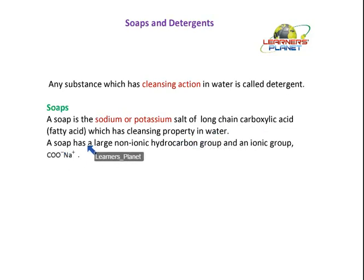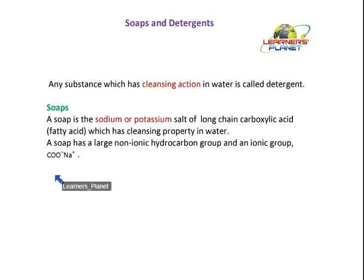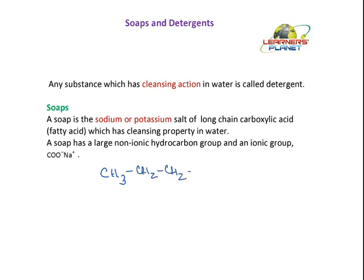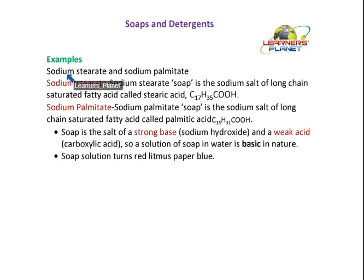Now let's see its structure. A soap has a large non-ionic hydrocarbon group and an ionic group. The ionic group here is COO⁻ and Na⁺. To show you, there is a long hydrocarbon chain — CH₃, CH₂, CH₂, CH₂ — and there is COO⁻ Na⁺. So this is the sodium salt of a long-chain carboxylic acid, which is soap. Let's take some examples: sodium stearate and sodium palmitate are the most commonly used soaps.